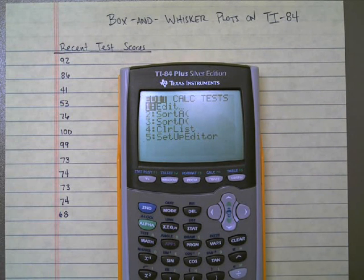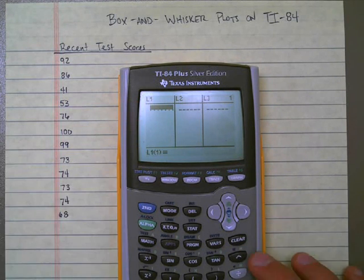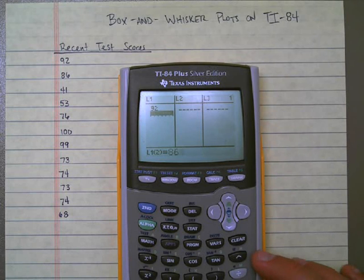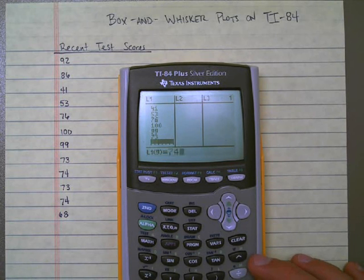So I'm going to hit enter, and that's going to take me into the editing mode. And so now I can enter this data into the list. So I'm going to type these values in: 92, 86, 41, 53, 76, 100, 99, 73, 74, 74, and 68.